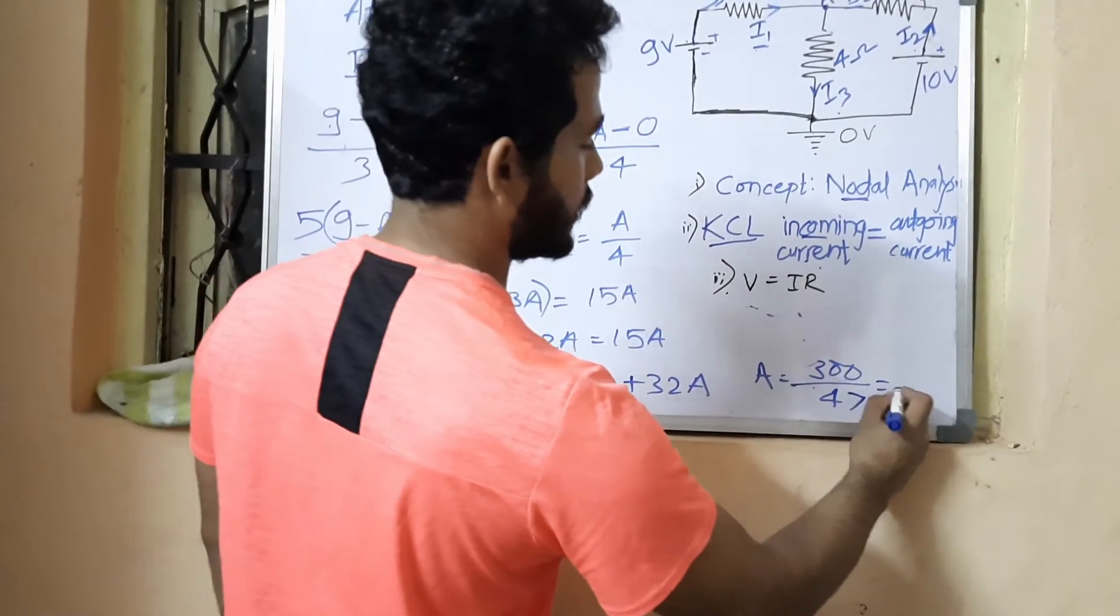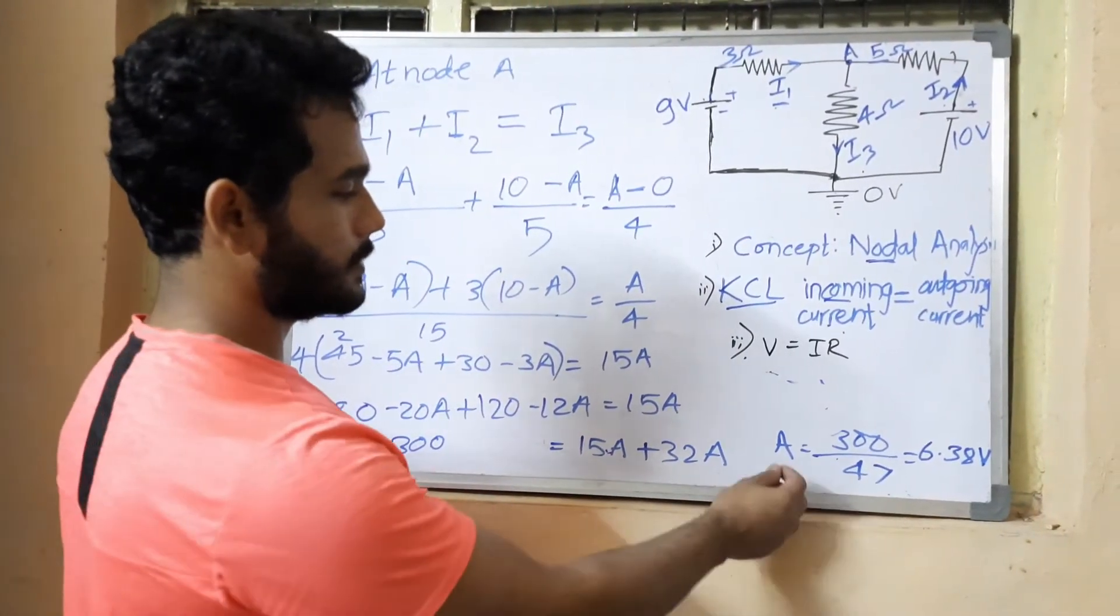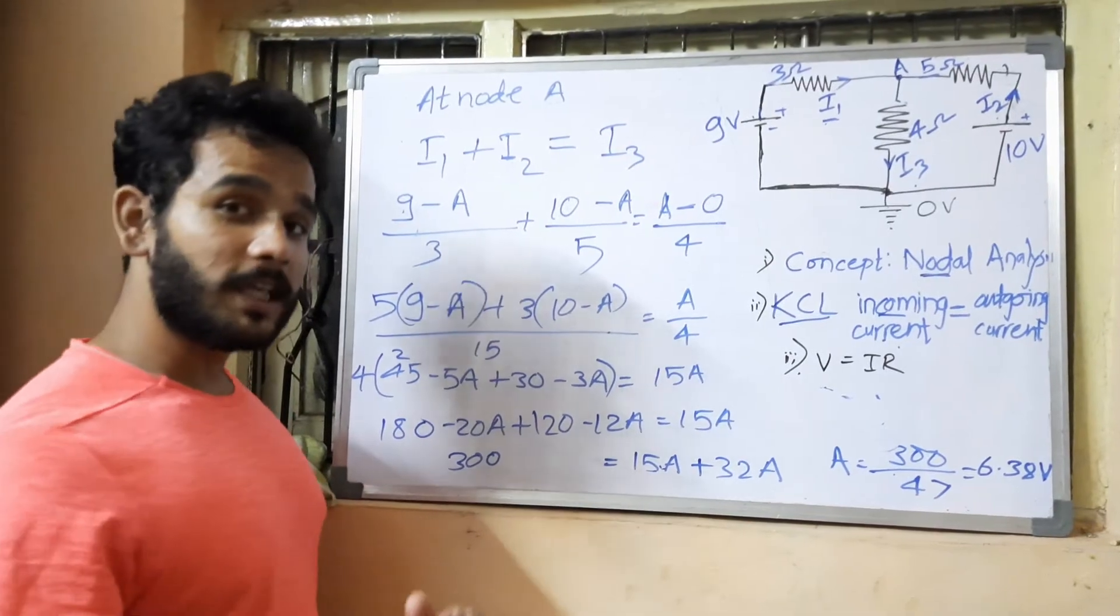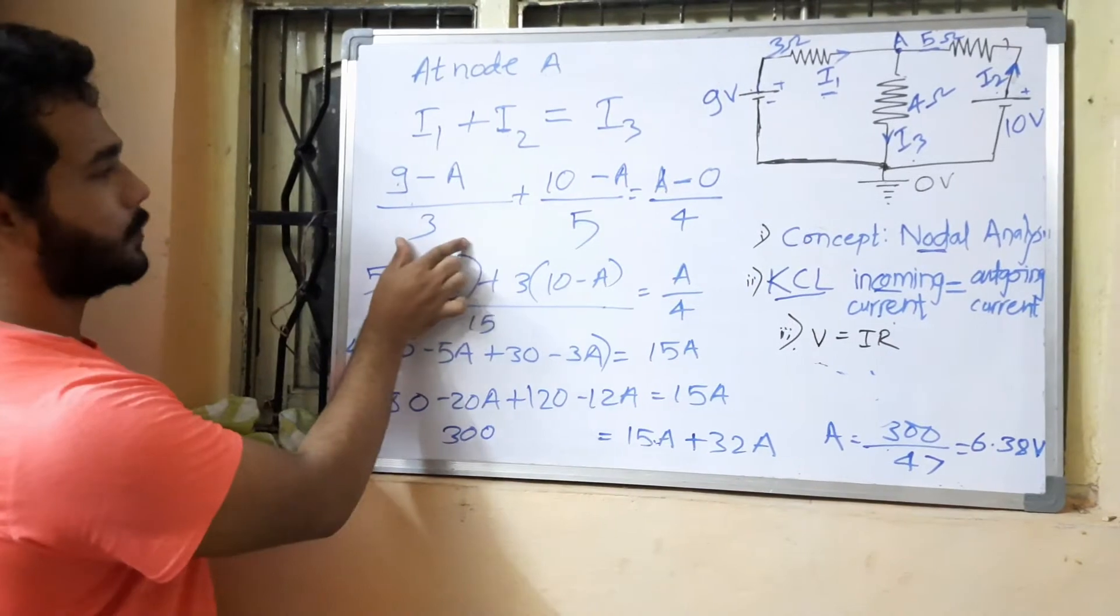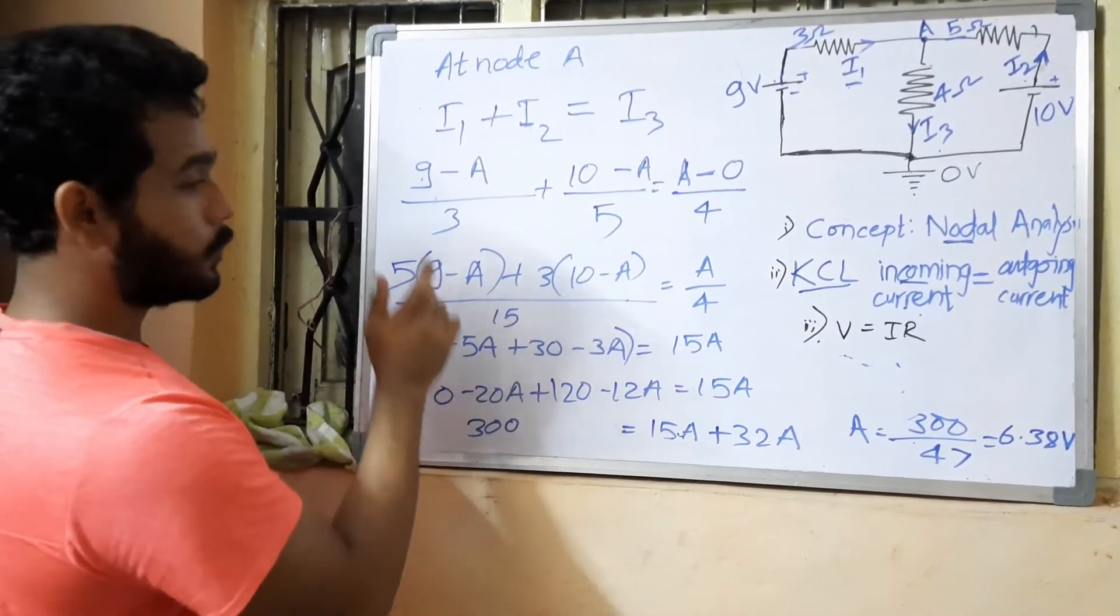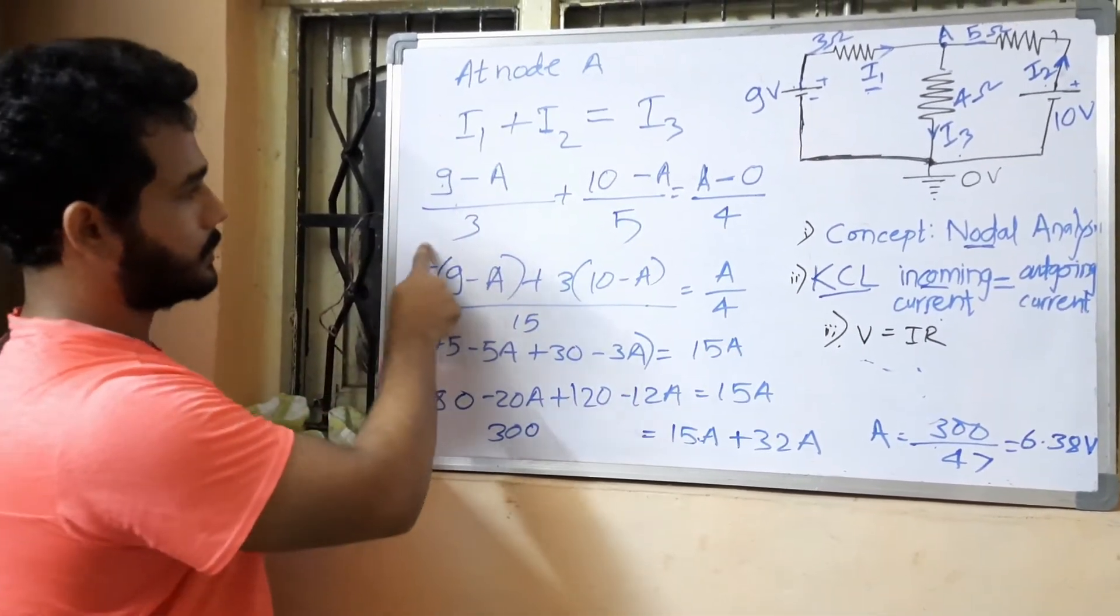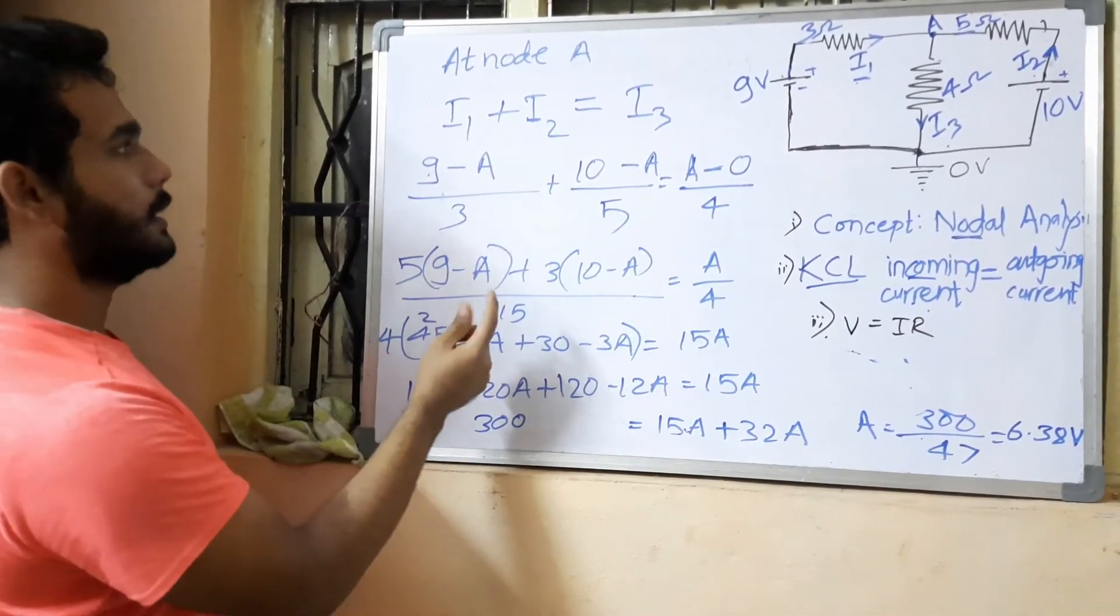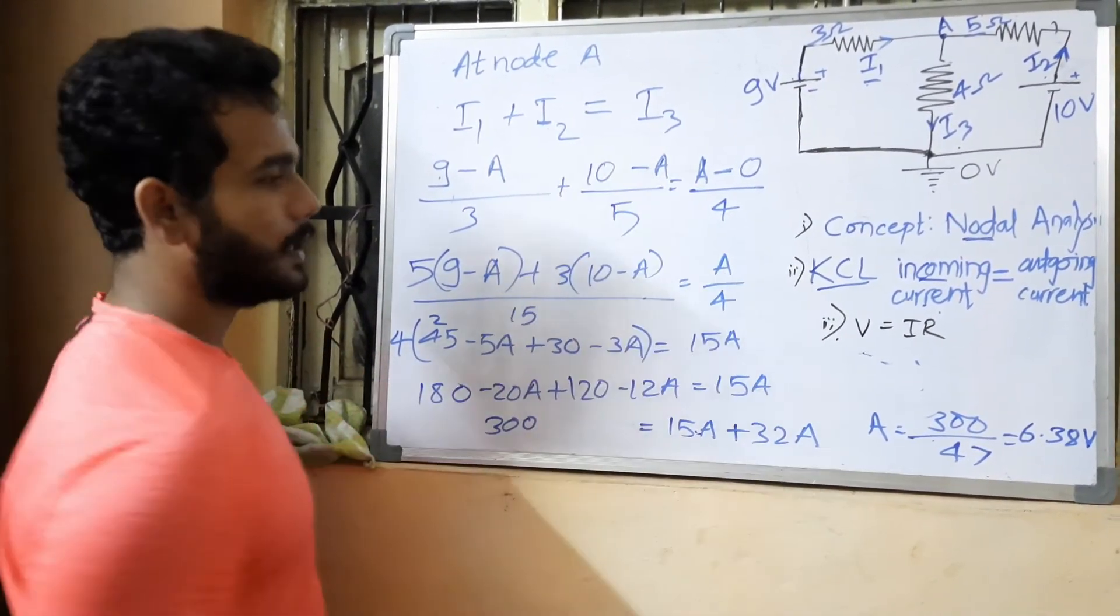Using calculator we can find after calculating, A is equal to 6.38 volt. Now put this value of A, that is 6.38 volt, in this equation. To calculate individual i1, take this term and put the value of A, then we will find what is the value of i1, then i2 similarly, then i3.